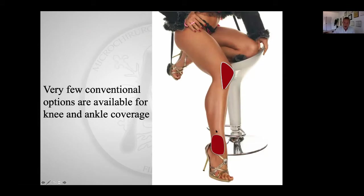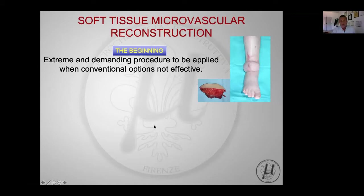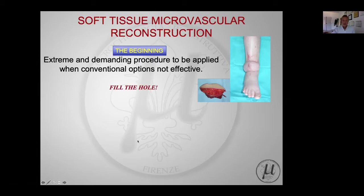In the early days, reconstructive microsurgery was considered an extreme and demanding procedure to be applied only when conventional options were not effective. You can see here a result of conventional free flaps - this is a myocutaneous rectus abdominis free flap. You see it covered the defect, but the aesthetics and cosmetics are very poor and the function is not the best.